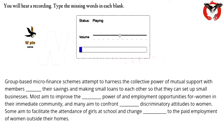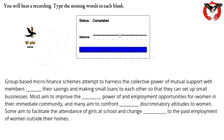Group-based microfinance schemes attempt to harness the collective power of mutual support, with members pooling their savings and making small loans to each other so that they can set up small businesses. Most aim to improve the economic power of and employment opportunities for women in their immediate community. Many aim to confront ingrained discriminatory attitudes toward women, and some aim to facilitate the attendance of girls at school and change attitudes to the paid employment of women outside their homes.